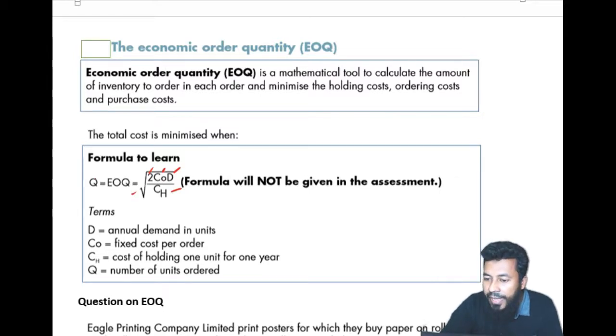The D stands for annual demand in units. CO is the cost of order. CH is the cost of holding one unit for one year. And Q is the number of quantity you need to order.